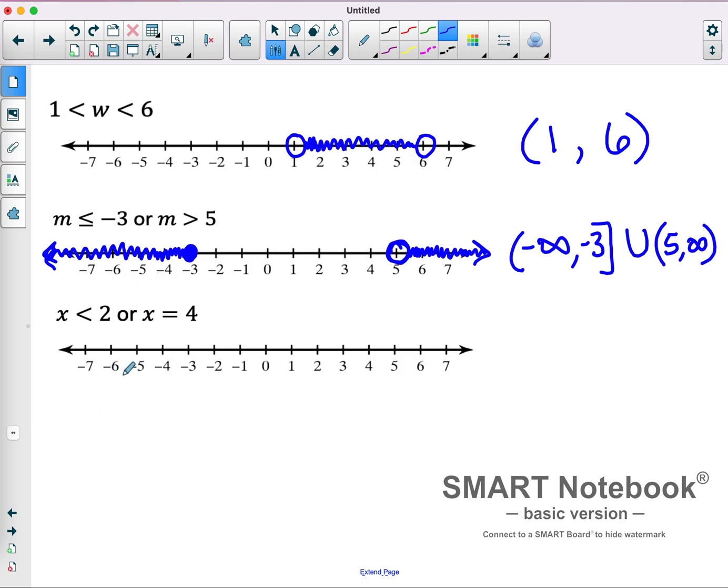The last one here is x is less than 2. So, I'm going to have an open circle at 2. And every value that's less shades to the left there. And then x could be equal to 4. Since it's a solitary number, we're going to have a single dot at 4. It doesn't go shaded either way. It's just 4.